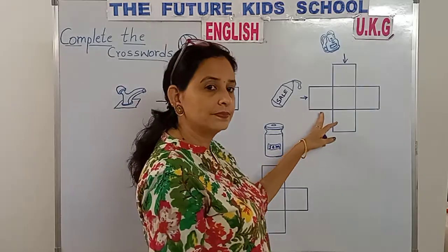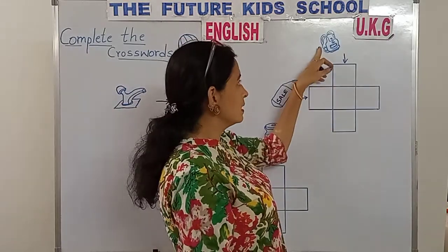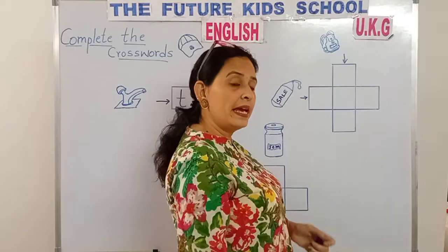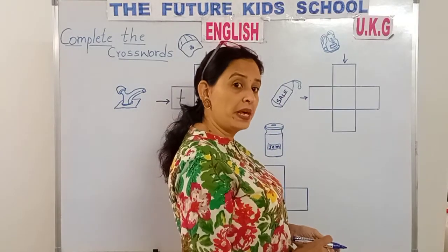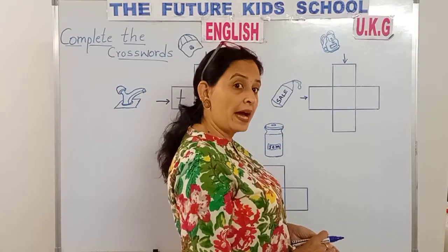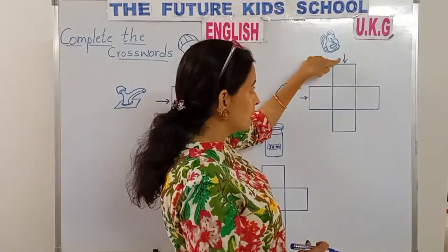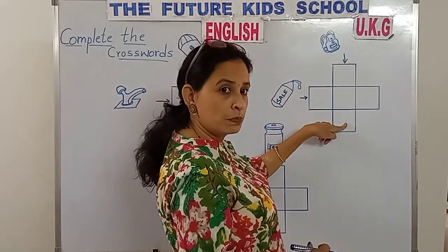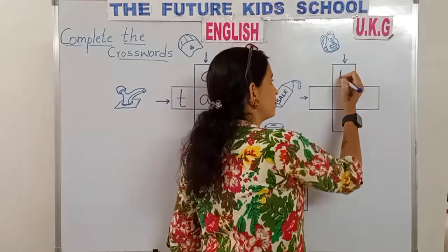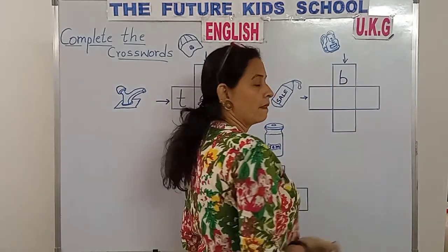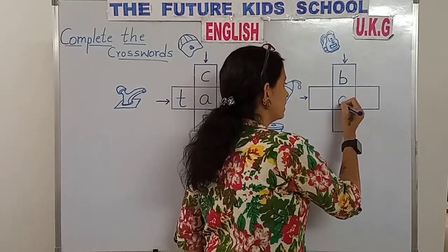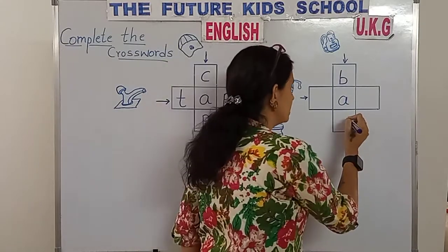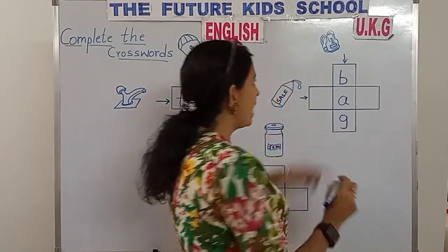Look here, children. This is a bag. B-A-G spells bag. Look at this arrow. Let's write the word bag here in these blocks. B-A-G. Bag.